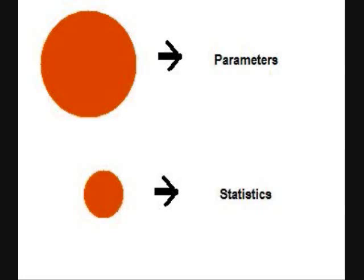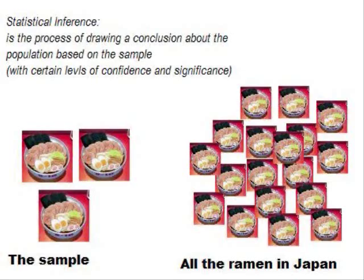Parameters and statistics: populations are described by parameters, and samples are described by statistics. For example, the average hair length of all domestic cats reflects the true value of the population — that's a parameter. The average hair length of cats in my sample is an estimate — that's a statistic. Statistical inference is the process of drawing a conclusion about the population based on the sample, with certain levels of confidence and significance.